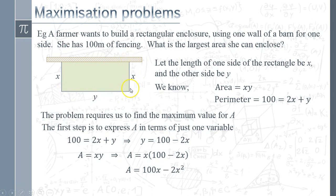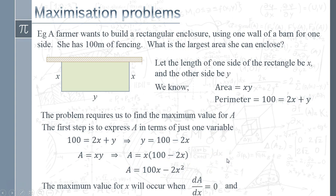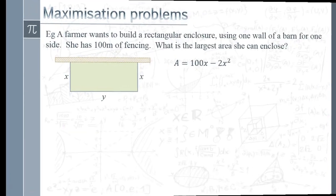As this side changes, the other will change linked to it, so we're just adjusting x and seeing what happens to the area. We know the maximum value will occur when the gradient function — dA/dx — equals zero, and to confirm it's a maximum we also need d²A/dx² to be less than zero. This notation simply means we're differentiating A with respect to the variable x, asking how A changes when we change x.